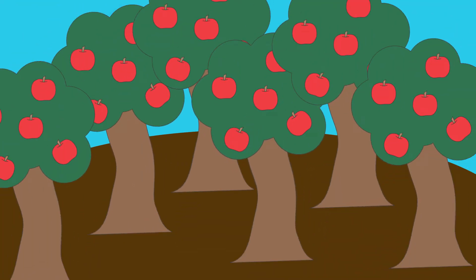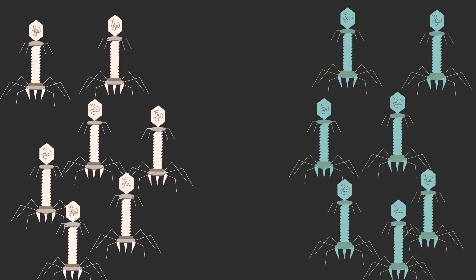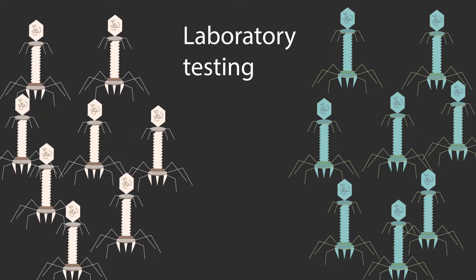After isolating a new phage, we must also proliferate the purified phages, generating enough copies to see the effects of the phages in tests, isolate genetic material for sequencing, and store the phages for future testing.